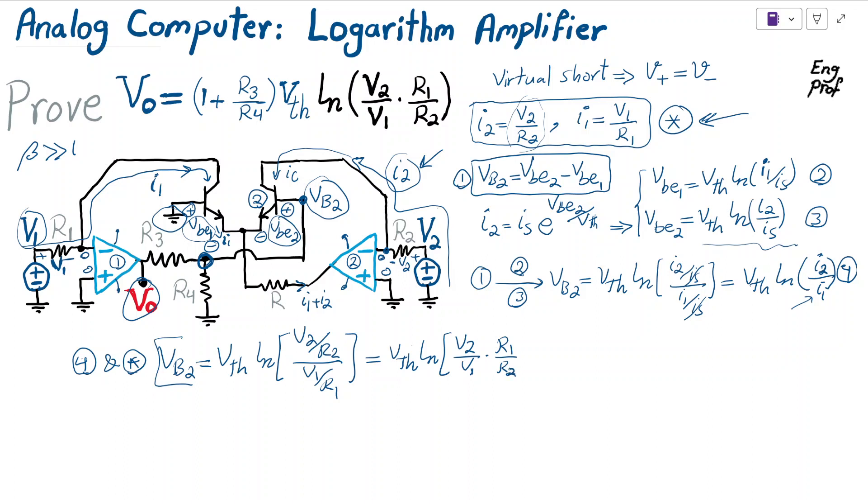As the last step, I need to find how Vout is related to VB2. There's a voltage division: VB2 is simply R4 over R3 plus R4 times Vout. Therefore, Vout is R3 plus R4 divided by R4 times VB2, which is 1 plus R3 over R4 times VB2.